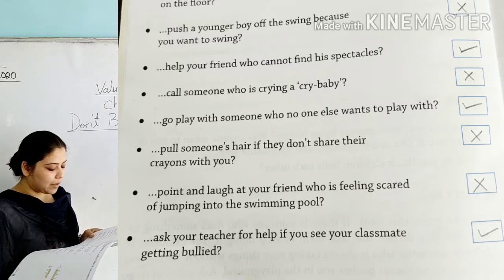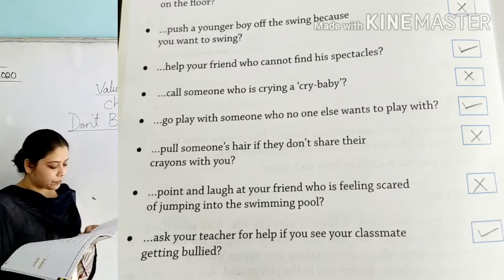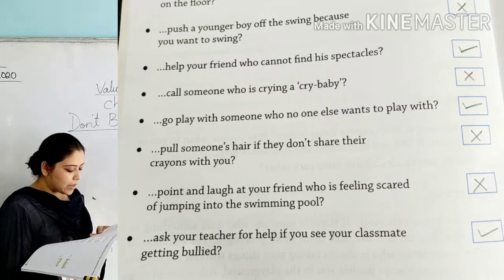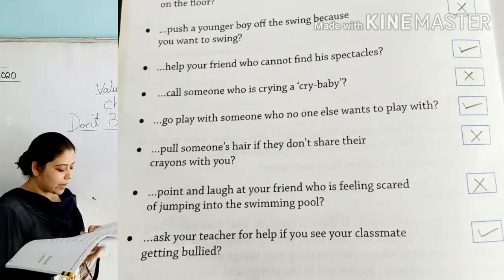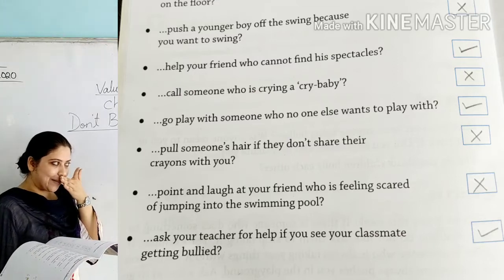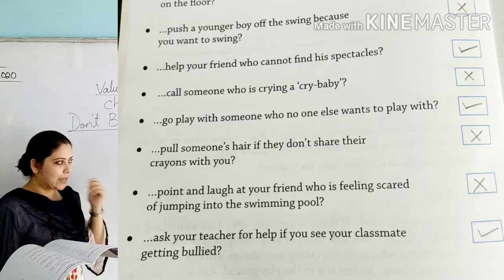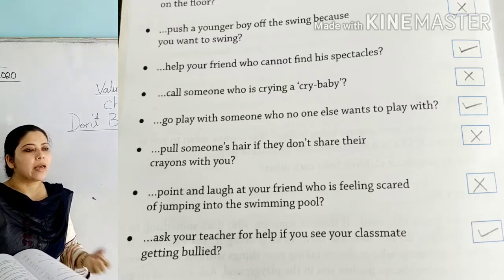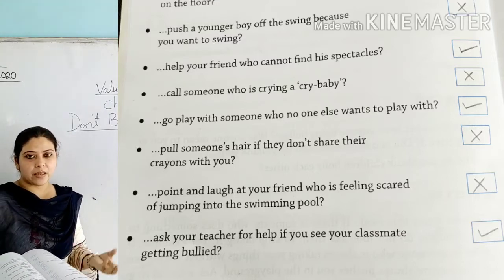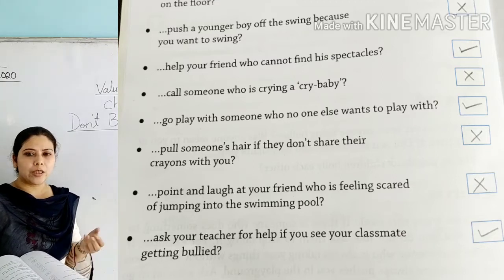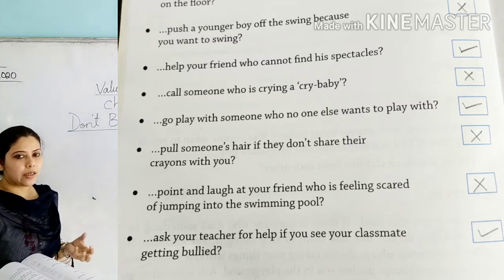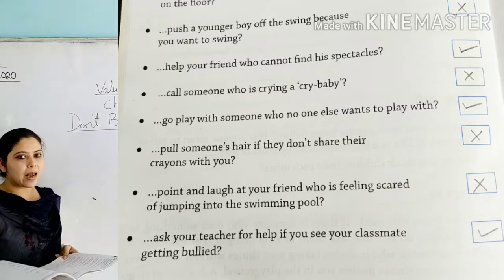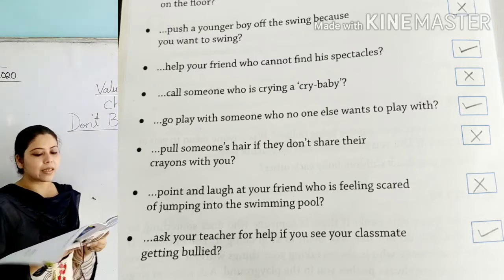'Point and laugh at your friend who is scared of jumping into the swimming pool' — this is wrong, you cannot do this to your friend. And the last one: 'Ask your teacher for help if you see your classmate getting bullied' — this is something you should do. If there is a student being bullied all the time, you should always inform your teacher. So this is correct — tick.